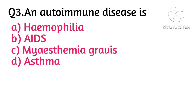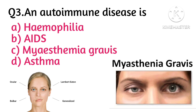Question number 3: an autoimmune disease — option C is correct, i.e., Myasthenia gravis. Myasthenia gravis is an autoimmune disease, which means the immune system, which normally protects the body from foreign organisms, mistakenly attacks itself. Myasthenia gravis is caused by an error in the transmission of nerve impulses to muscles.